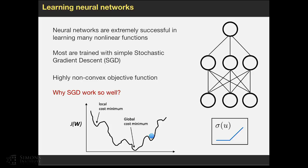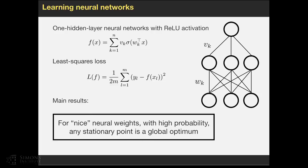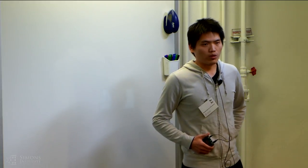In this talk, I'm going to give some first attempt to solve this question. We look at one particular model, which is one hidden layer neural net with ReLU activation functions. The first layer of weights are called WKs and the second layer of weights are the VKs. This function is parameterized as f(x) equals sigma, where sigma is the ReLU activation function. We optimize this least squares loss over M data points. The main result is that for nice configurations of the neural weights, the Ws, with high probability, we can guarantee that any stationary point will be a global optimum.